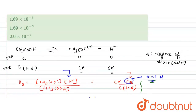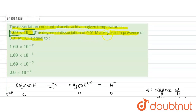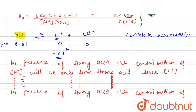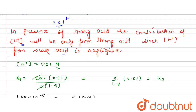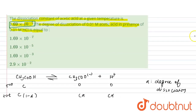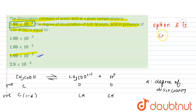This was what was asked — the degree of dissociation in the presence of HCl equals 1.69 × 10⁻³. You can see that option 3 is the correct choice. I hope you have understood. Thank you very much.